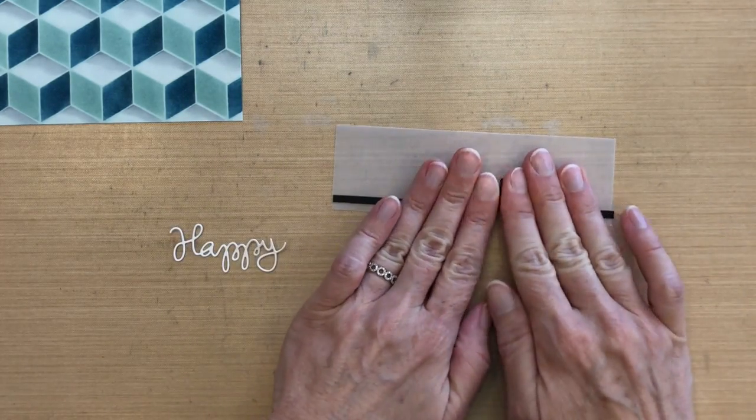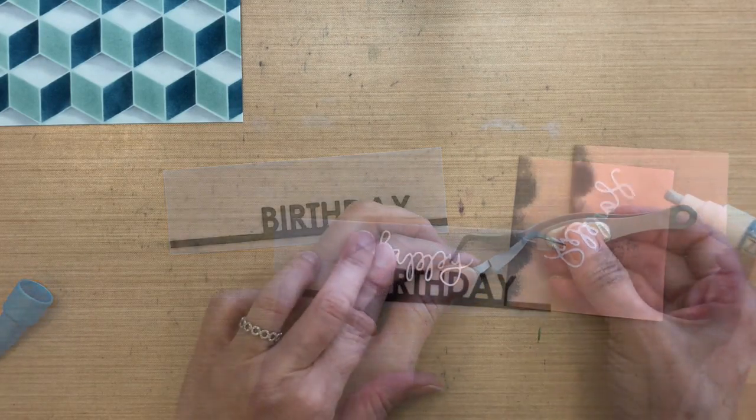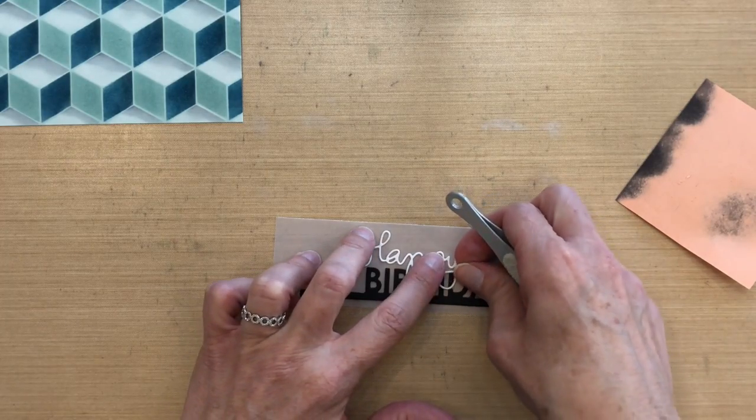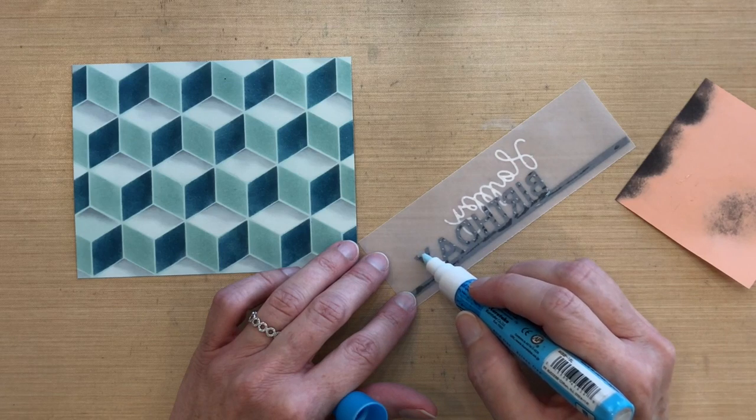And then I'll take my happy and put some two-way glue on the back of it, and I'm going to overlap it just a little bit so that I have the same distance between the H and the top and the line of the birthday and the bottom.